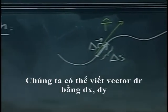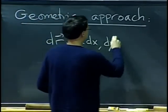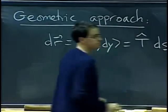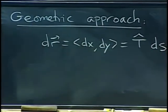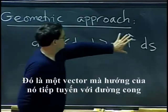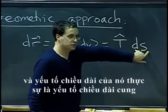We can write vector dr. We say that it is dx, dy, but that is also t times ds. It is a vector whose direction is tangent to the curve and whose length element is actually the arc length element.